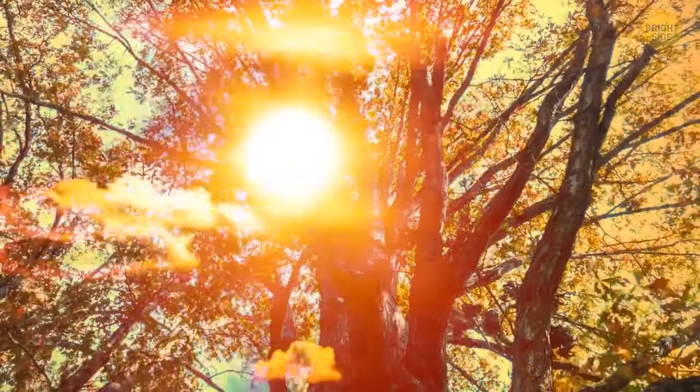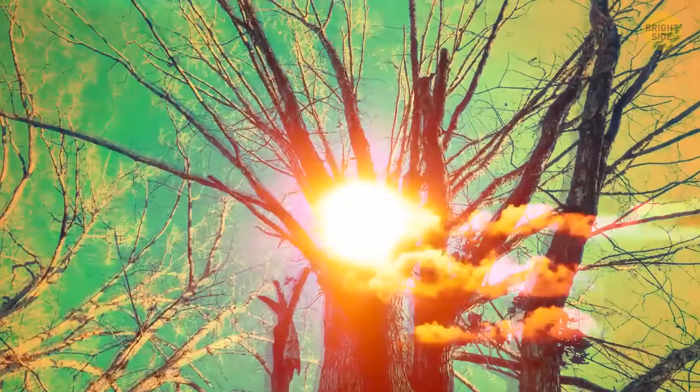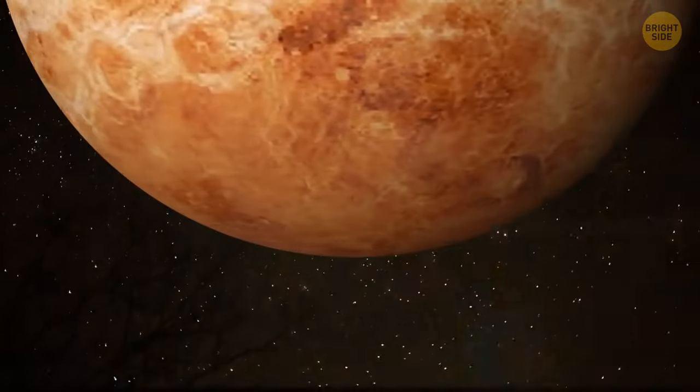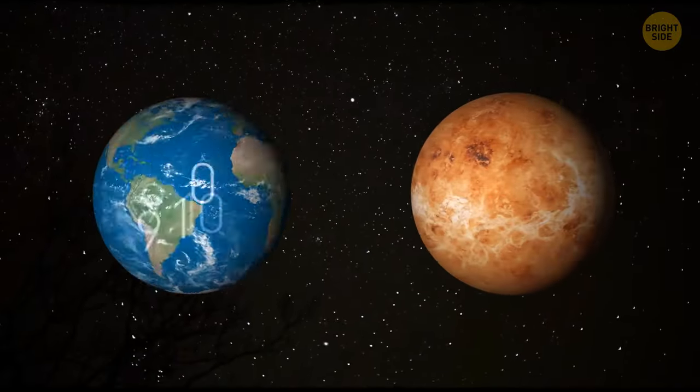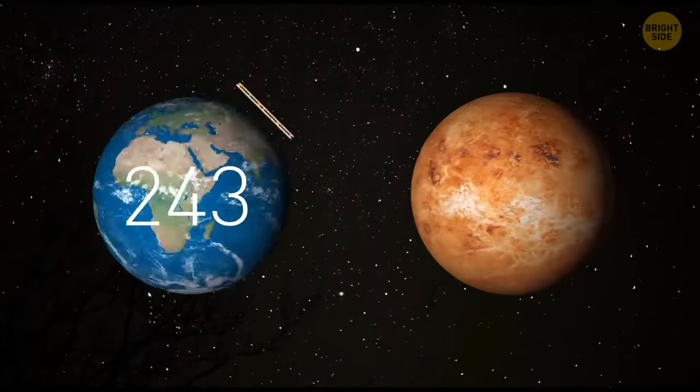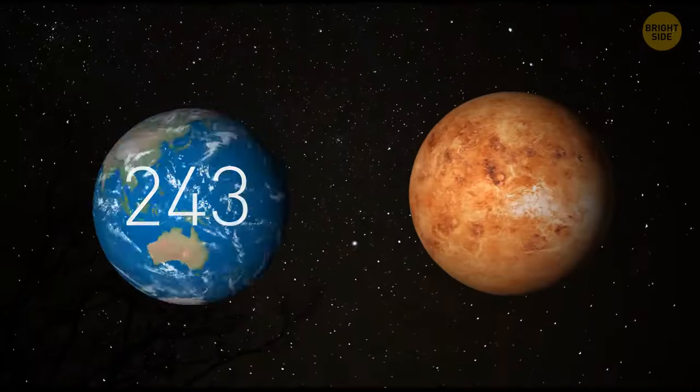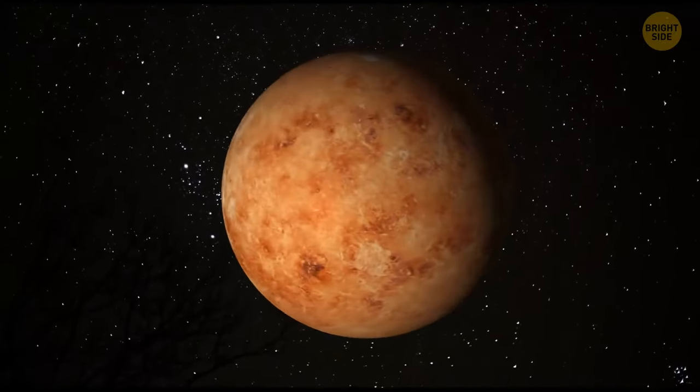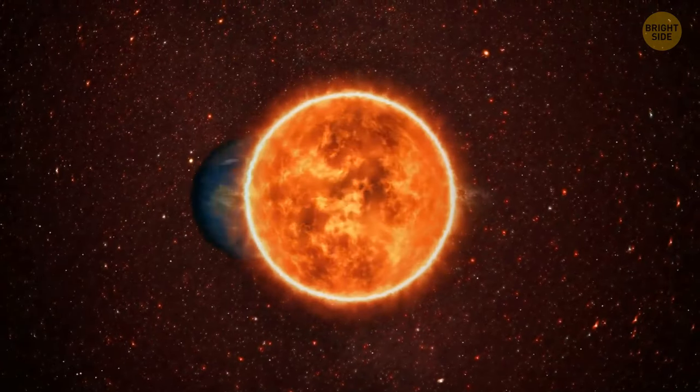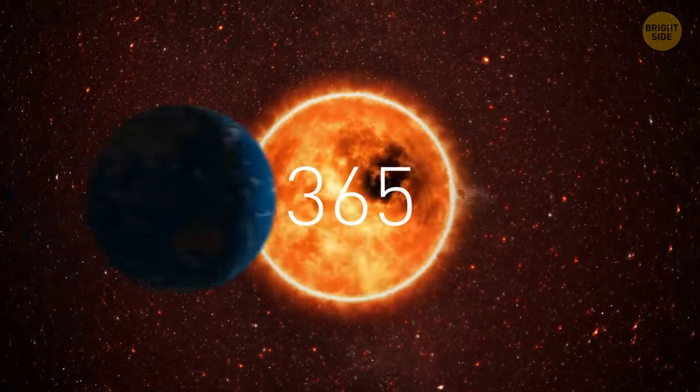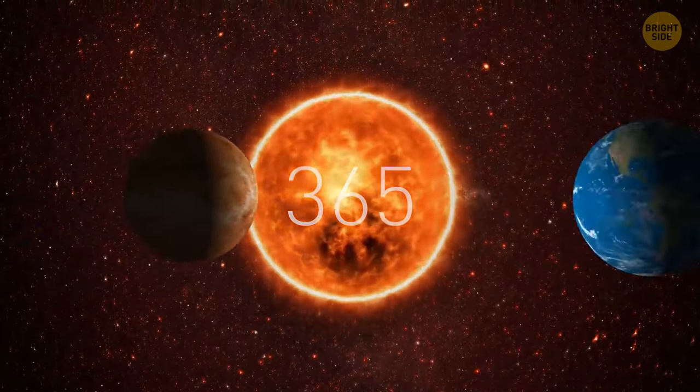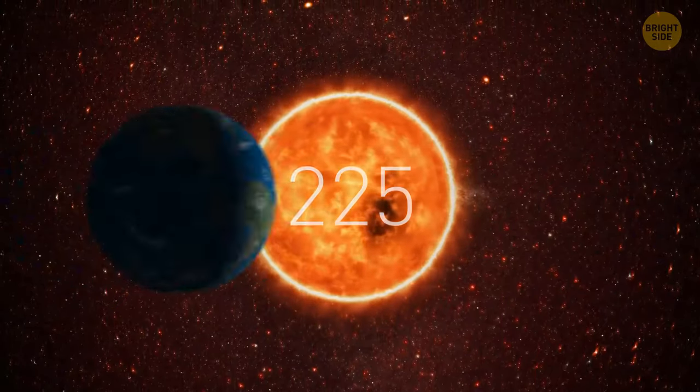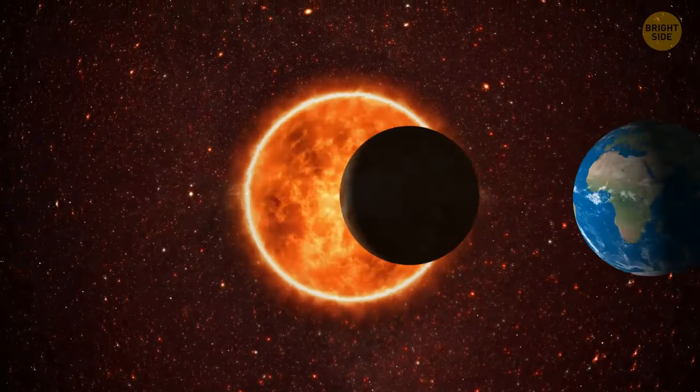Now imagine a place where a single day lasts longer than a whole year. On Venus, a day, meaning one full spin on its axis, is as long as 243 Earth days. And what's even weirder, despite the fact that Venus is experiencing a never-ending day, it has a shorter year than Earth. While Earth takes about 365 days to complete one orbit around the Sun, Venus does it in just 225 days. So, somehow, for Venus, a day is more epic than a whole year.